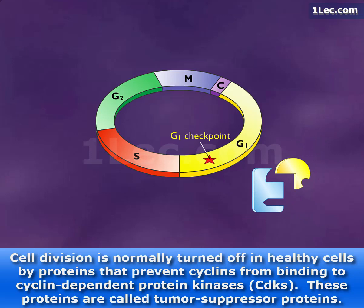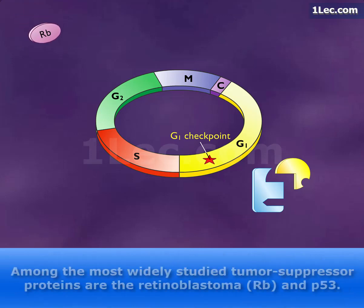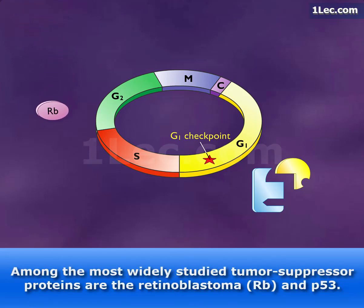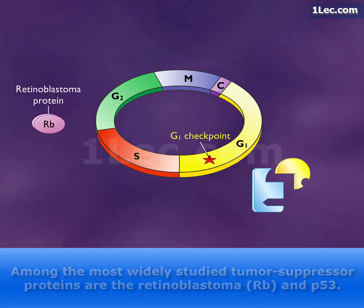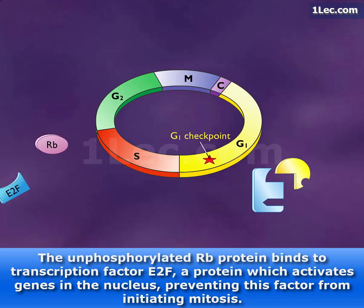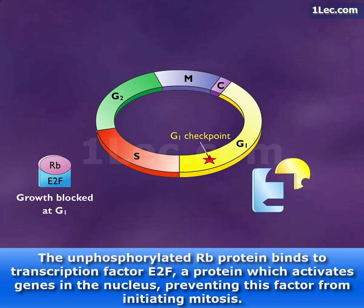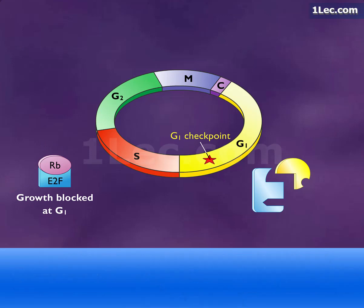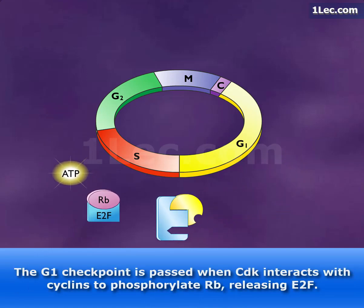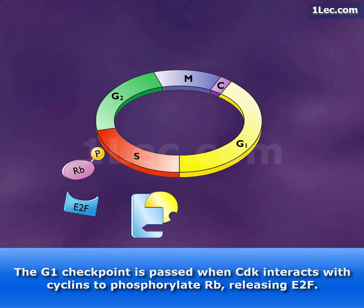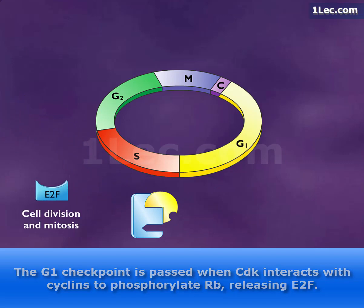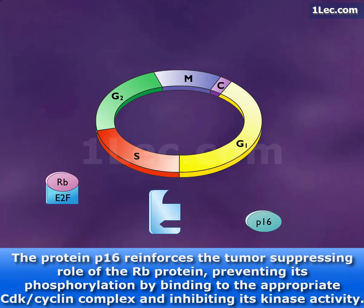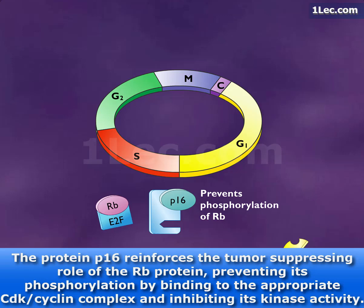These proteins are called tumor suppressor proteins. Among the most widely studied tumor suppressor proteins are retinoblastoma (RB) and P53. The unphosphorylated RB protein binds to transcription factor E2F, a protein which activates genes in the nucleus, preventing this factor from initiating mitosis. The G1 checkpoint is passed when CDK interacts with cyclins to phosphorylate RB, releasing E2F. The protein P16 reinforces the tumor-suppressing role of the RB protein, preventing its phosphorylation by binding to the appropriate CDK-cyclin complex and inhibiting its kinase activity.